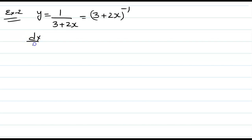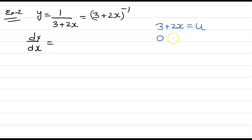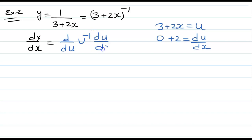This we can write as (3 plus 2x) to the power minus 1. We need to find dy over dx. We can suppose 3 plus 2x as u. If you differentiate, the differentiation of 3 with respect to x is 0, this will be 2, and we get du over dx equals 2. So dy over dx equals d over du of u to the power minus 1 times du over dx.